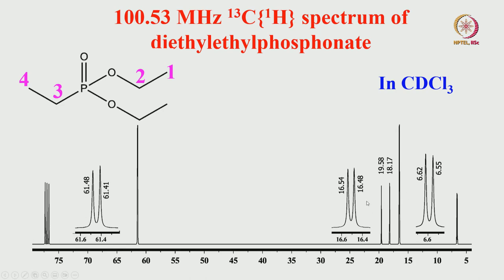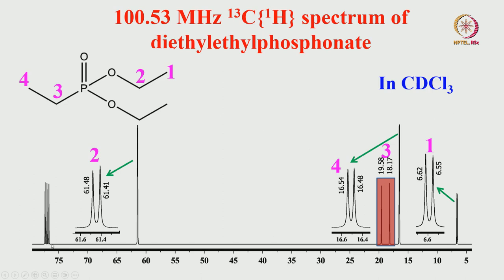Each of the three different carbons in this molecule is a doublet. Carbon-1 is a doublet due to coupling with phosphorus via one, two, or three bonds. Phosphorus is a spin-½ nucleus, so each carbon peak is split into a doublet. Carbon-2 also shows a doublet from two-bond P-C coupling. Carbon-3, directly bonded to phosphorus, has a quite large splitting and is also a doublet. Carbon-4, expanded here, has two-bond coupling with phosphorus—also a doublet. From the coupling strength, we can make assignments easily: one-bond coupling is largest, then two-bond, then three-bond.